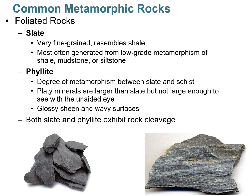Let's look at common foliated metamorphic rocks. Slate is very fine-grained and resembles shale — shale is most often the parent rock — and it forms from low-grade metamorphism. Phyllite is a step up in metamorphic grade; the platy minerals have grown in size but are still not large enough to see with the unaided eye. Phyllite has a slight sheen when held up to light. Both slate and phyllite exhibit rock cleavage, so you can chisel them into slabs.